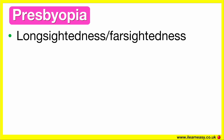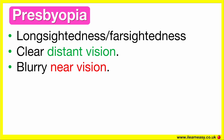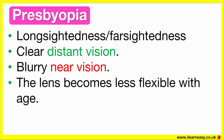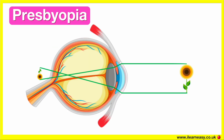Presbyopia is also known as long-sightedness or far-sightedness. In simple terms, it's when a person's distant vision is clear, but their near vision is blurry. The cause of presbyopia is that the lens becomes less flexible with age. This usually starts after the age of 40. With presbyopia, light focuses behind the retina when looking at close objects, so close vision becomes blurry, but distant vision is usually fine.